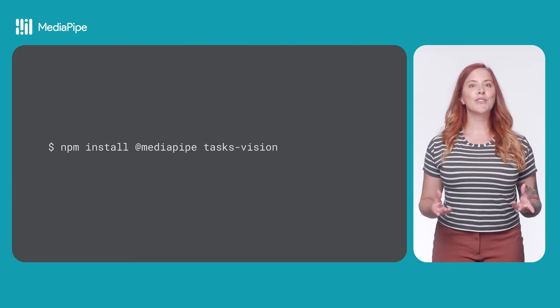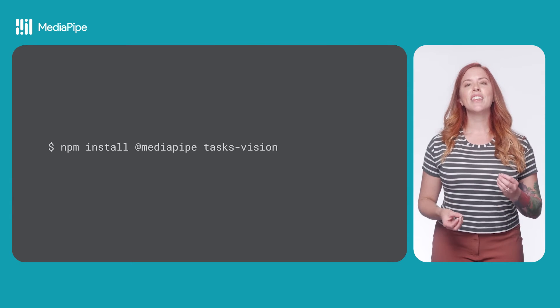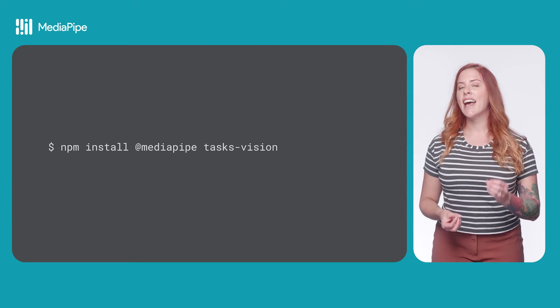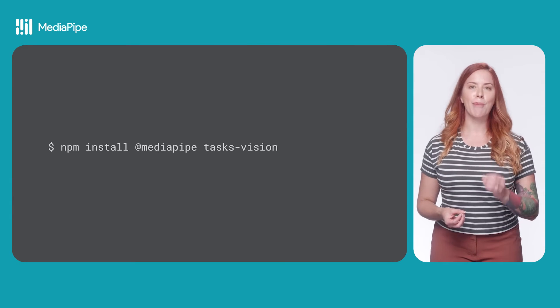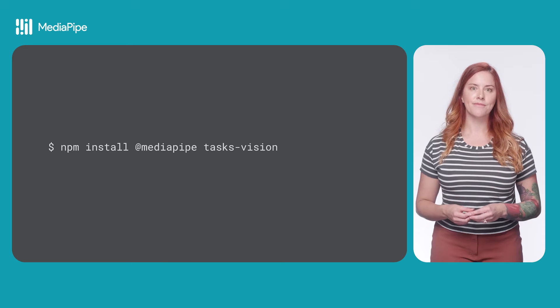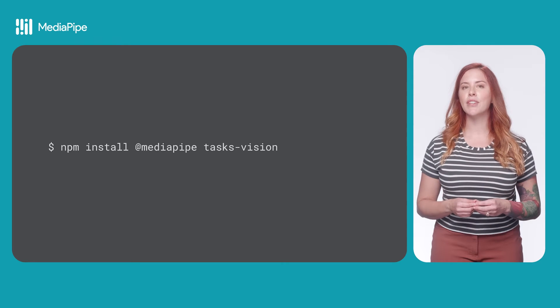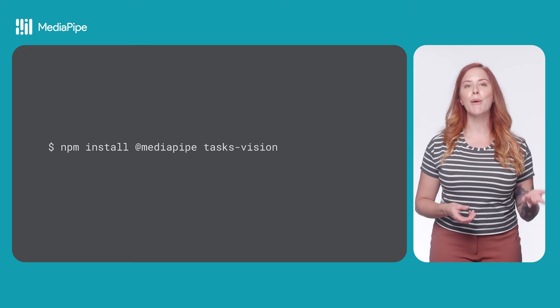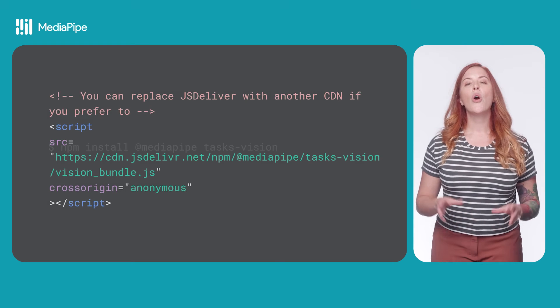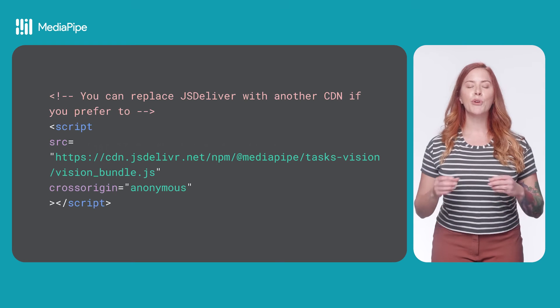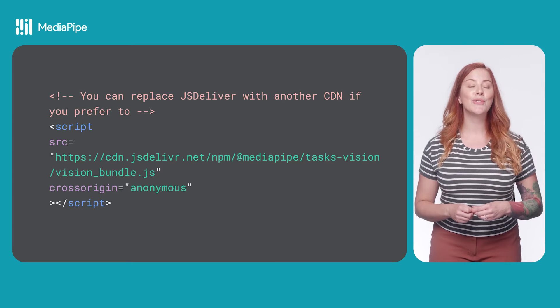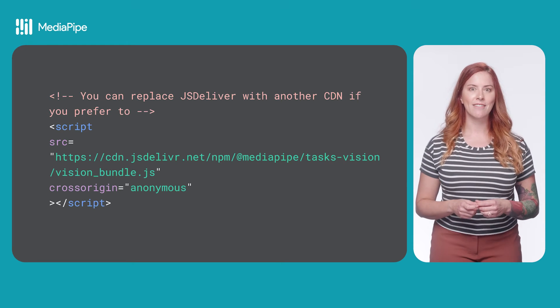Now that you've chosen a model, install the TasksVision package. You can download the package using NPM and use a JavaScript compilation tool like Webpack, or you can import the package using a CDN.